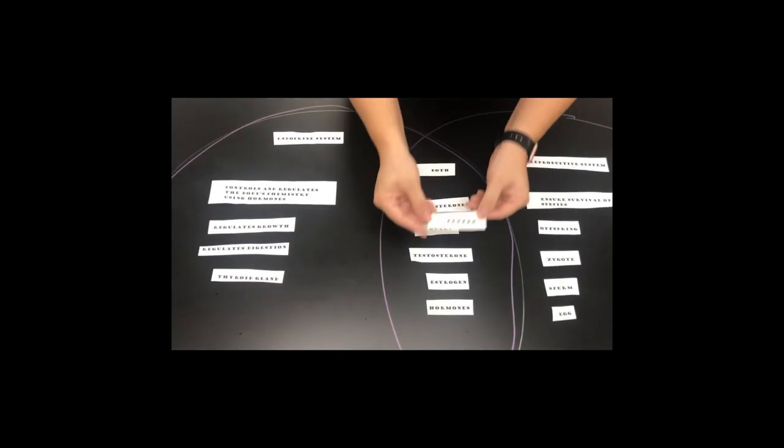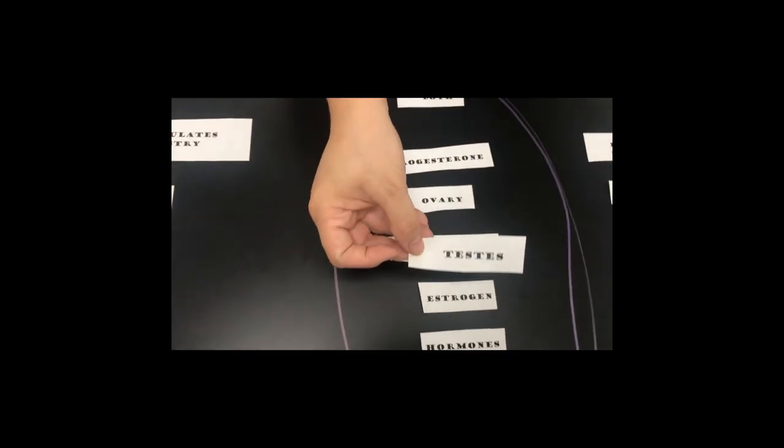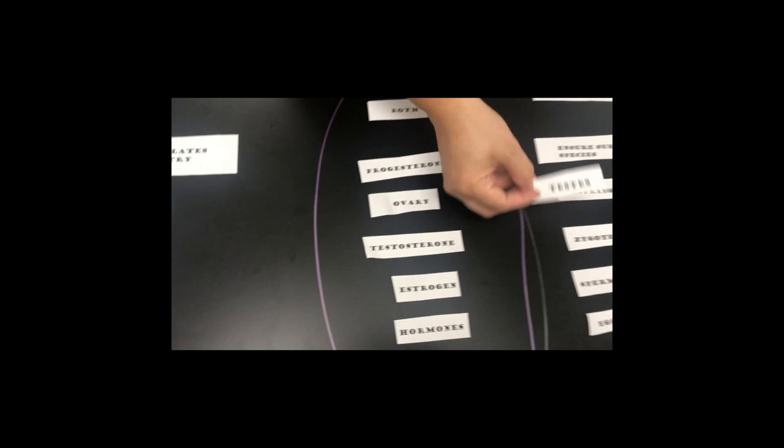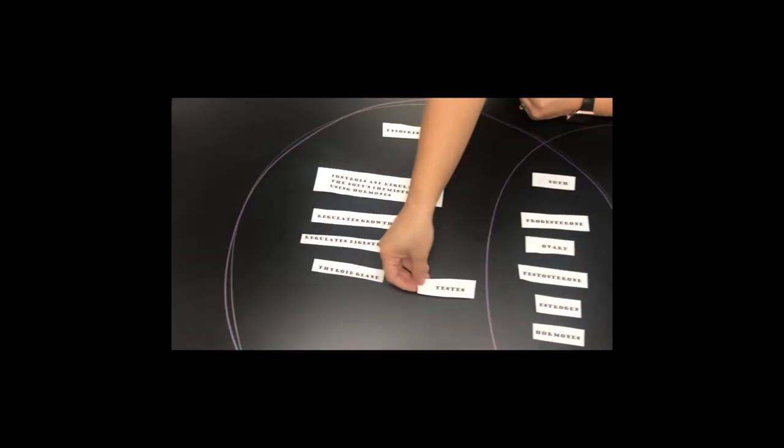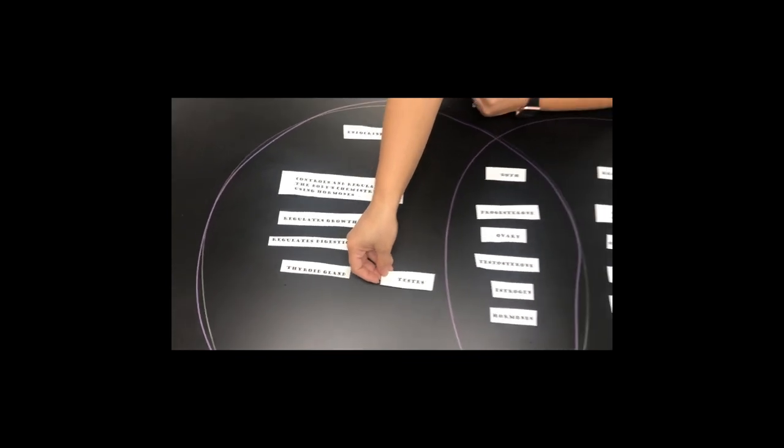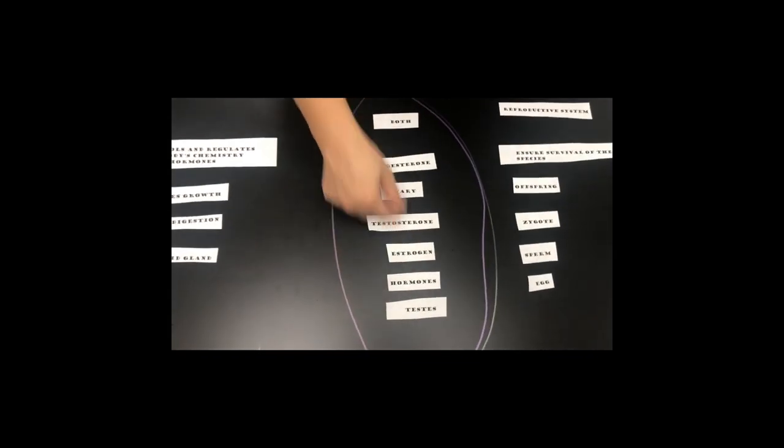And then the last one we have is testes. The testes are found in males. They are part of the male reproductive system, but they also produce hormones, which is part of the endocrine system. So we would put testes in both.